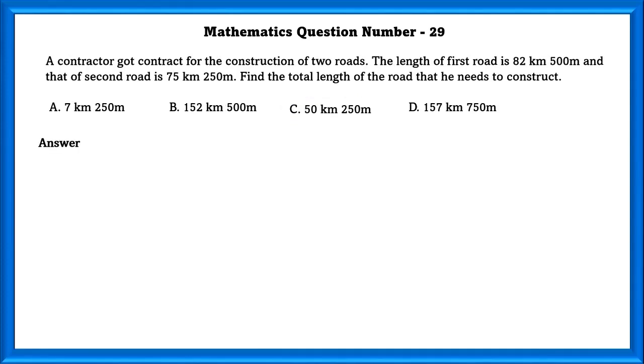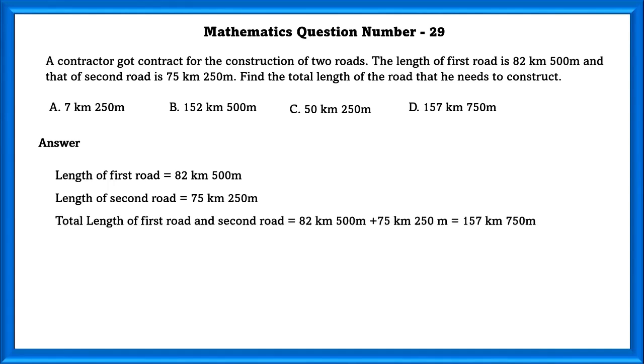Mathematics question number 29. A contractor got contract for the construction of two roads. The length of the first road is 82 kilometers 500 meters and that of the second road is 75 kilometers 250 meters. Find the total length of the road that needs to construct. First, length of the first road is equal to 82 kilometers 500 meters. Length of the second road is equal to 75 kilometers 250 meters. Length of the first and second road is equal to 157 kilometers 750 meters.